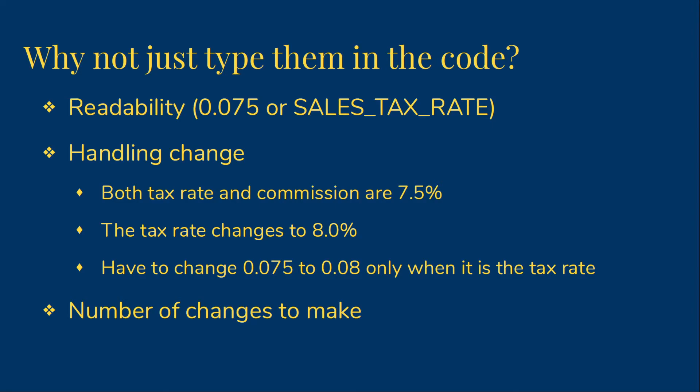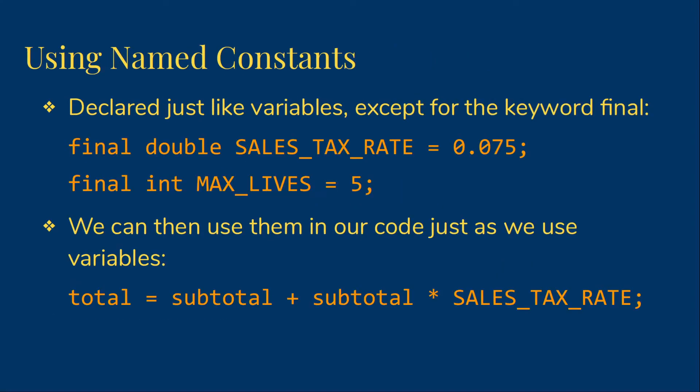So what does this look like? We declare and initialize our named constants just like we do variables, except that we add the keyword final, which indicates that once we put a value into the constant, we aren't allowed to change it. So here I have two examples: final double SALES_TAX_RATE is assigned 0.075 and final int MAX_LIVES is assigned 5.